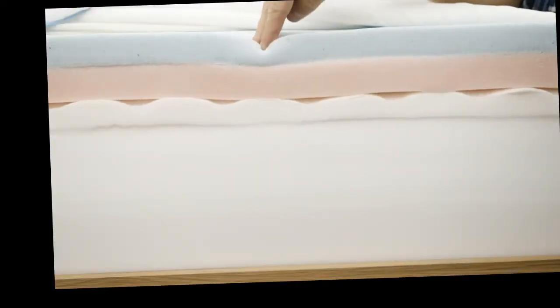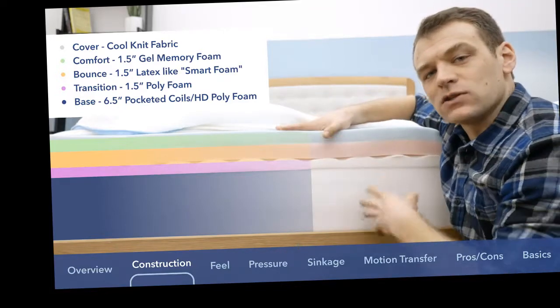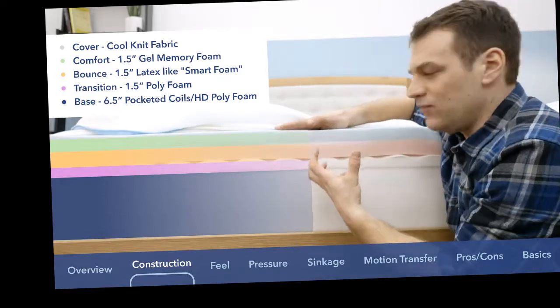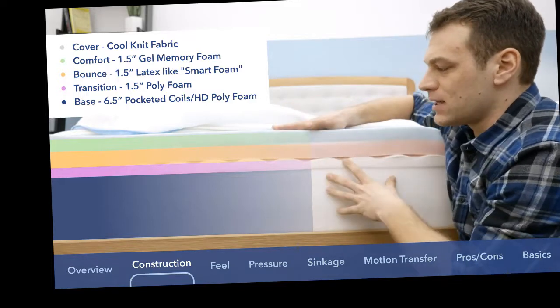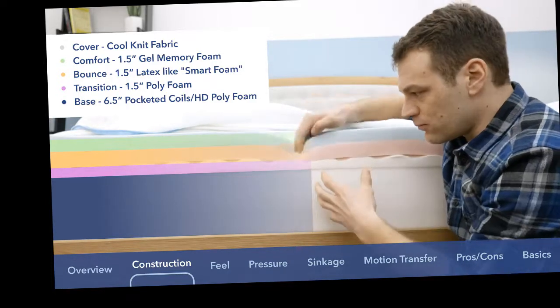Directly below that, the comfort layer of the mattress is an inch and a half or so of gel memory foam. Memory foam has a really slow response to pressure, giving you a contouring feeling. It's good for pressure relief, allowing you to sink into the mattress with contouring around your body. It's often really good for side sleepers, but you are going to push into it pretty quickly.